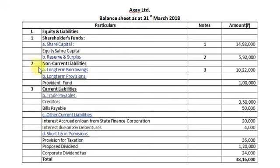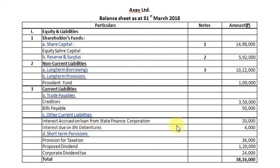Second item: Non-Current Liabilities. Under A — Long-Term Borrowings as per Note 3, Rs.10,22,000. Under B — Long-Term Provisions: Provident Fund Rs.1,00,000. Third item: Current Liabilities. There are no short-term borrowings, so we start with B — Trade Payables: Creditors Rs.3,50,000 and Bills Payable Rs.50,000. Under C — Other Current Liabilities: interest accrued on loan from State Finance Corporation Rs.20,000, and interest due on 8% debentures Rs.4,000.